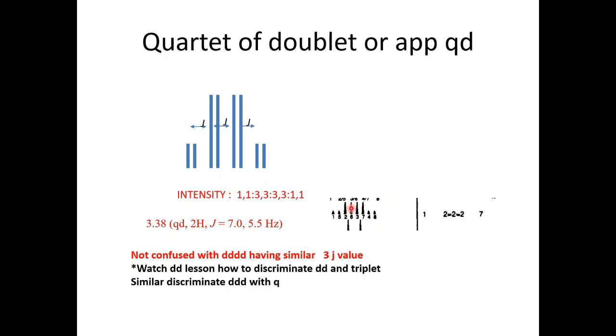So this is typically, I told you. This is 1, 1 intensity and 3, 3, 3, 3, 1, 1. So don't confuse with the apparent quartet of doublet.